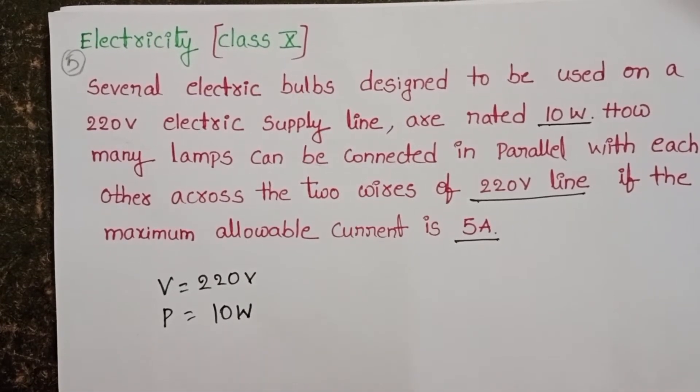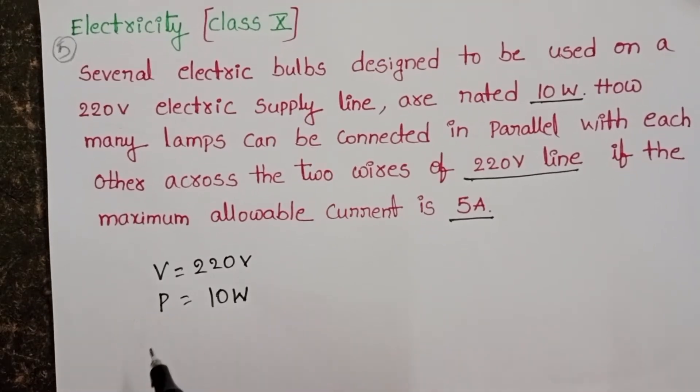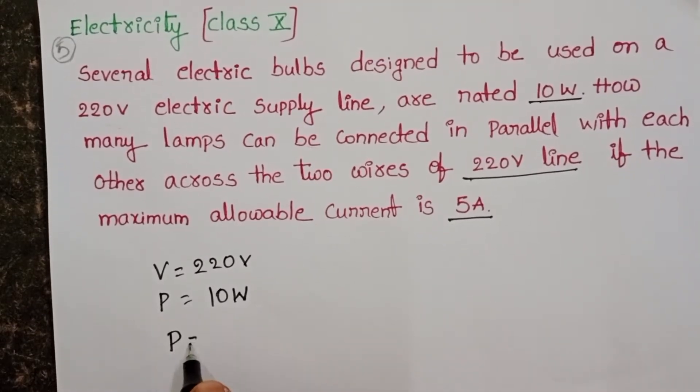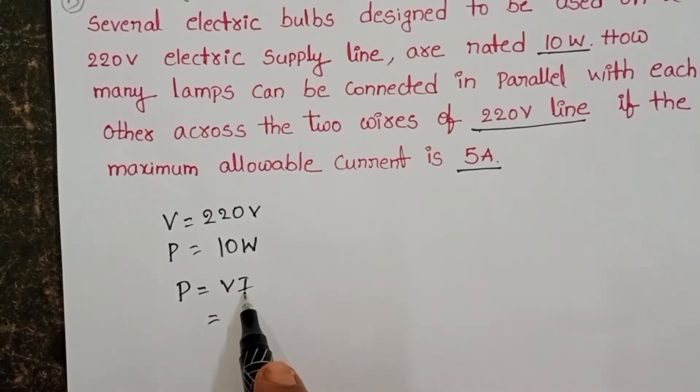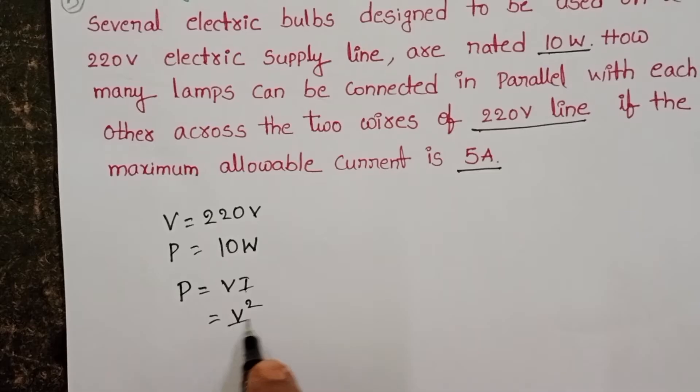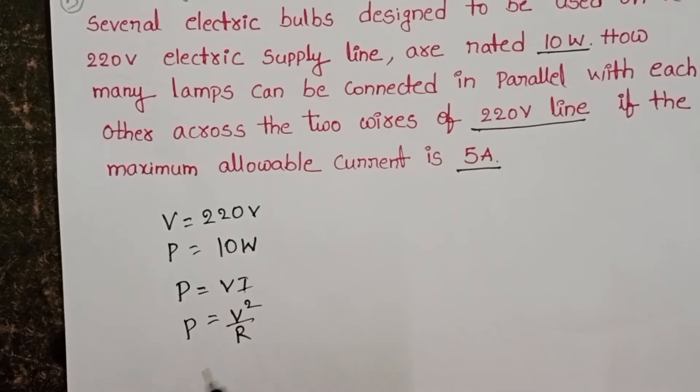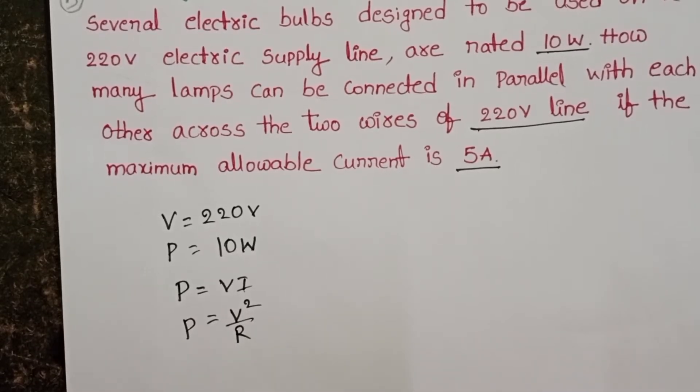By using this, first to find out resistance of each bulb: power equals VI, and in place of electric current, take V by R. Then it becomes V squared by R. Power equals V squared by R.